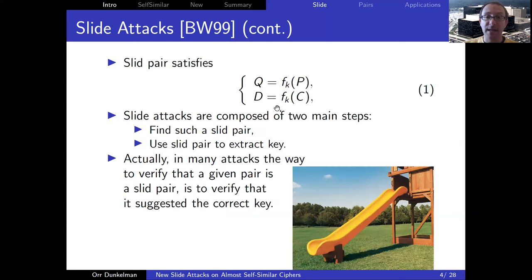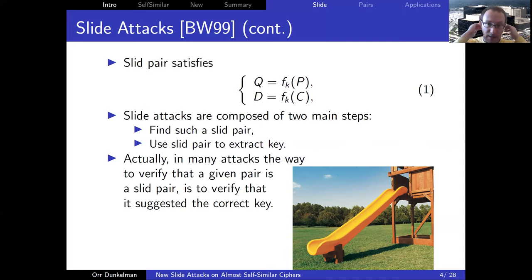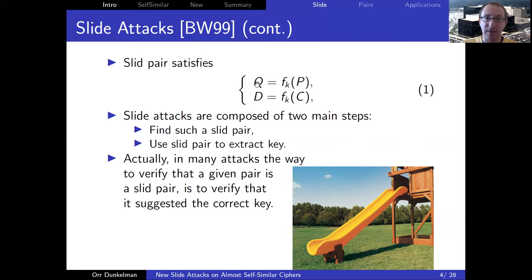Such a pair satisfies two conditions: Q equals the encryption of P, and D equals the encryption of C, but through only one round. Since we use many rounds for diffusion and confusion, breaking a single round is expected to be significantly simpler than breaking the entire scheme, especially as the scheme can have as many rounds as you want. The attack works as follows: find a slide pair P and Q satisfying this relation, then break F(K) — the round function — using the slide pair to find the key.